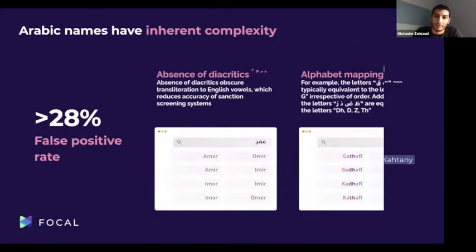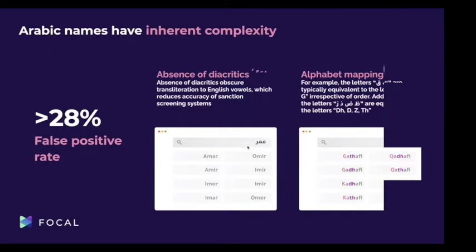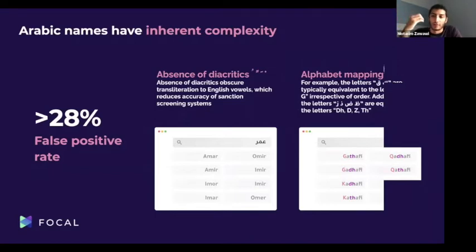Arabic has inherent complexity. First, there is the absence of diacritics — subletters that indicate how a word is pronounced. Without diacritics, which are not typical in everyday writing, a name like Umar can be translated into multiple possible variations, increasing false positives. Additionally, some Arabic letters can be written multiple ways in English — for example, the letter qaf can be written as Q, K, or J, as seen in Al-Qadhafi. We've observed that the general false positive rate in the local market is around 28%.